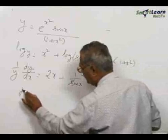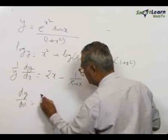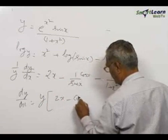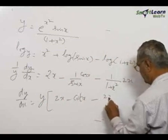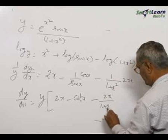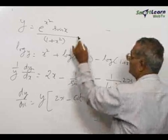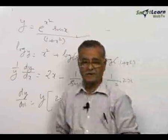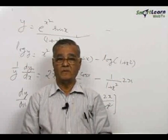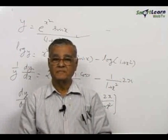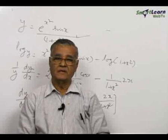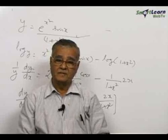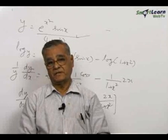So dy by dx is equal to y into 2x minus cot x minus 2x by 1 plus x square, where y stands for the given function. Like that when you come across complicated functions involving product and quotient, if you take logarithm it will be easier to differentiate rather than directly applying the product rule, quotient rule, or a function of function rule.